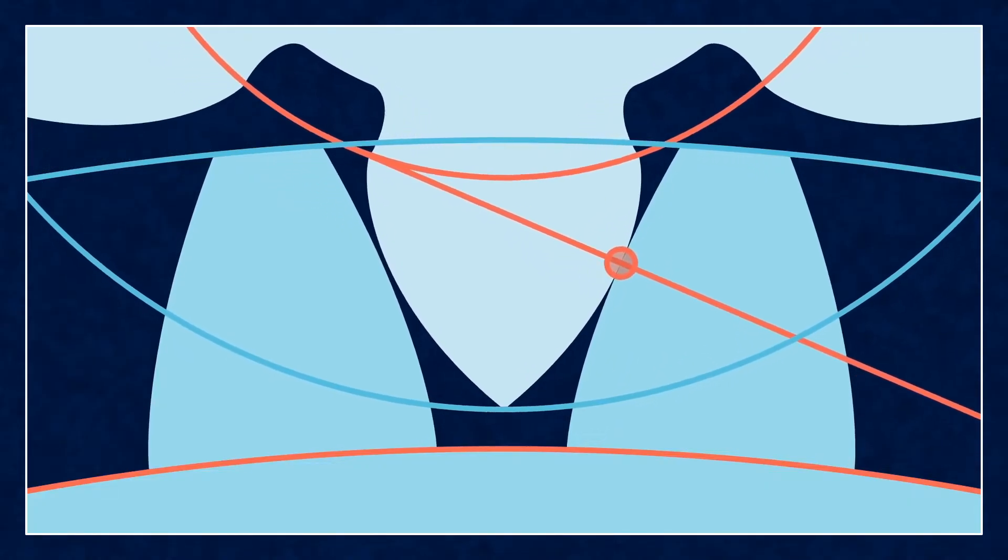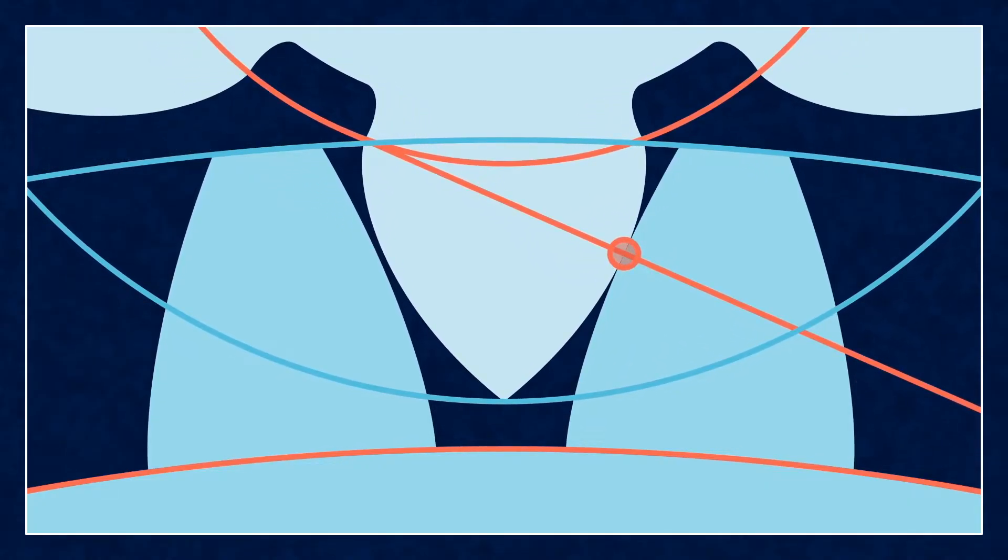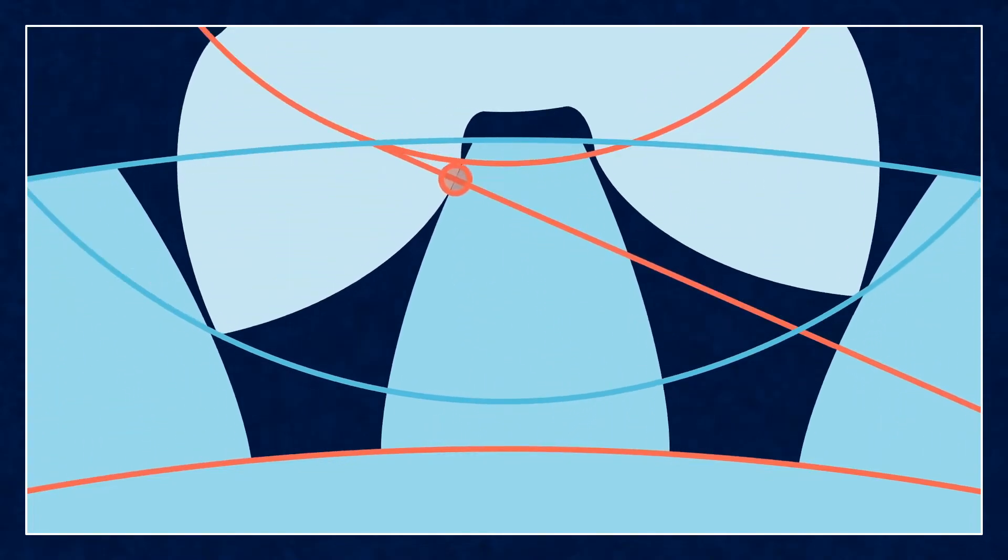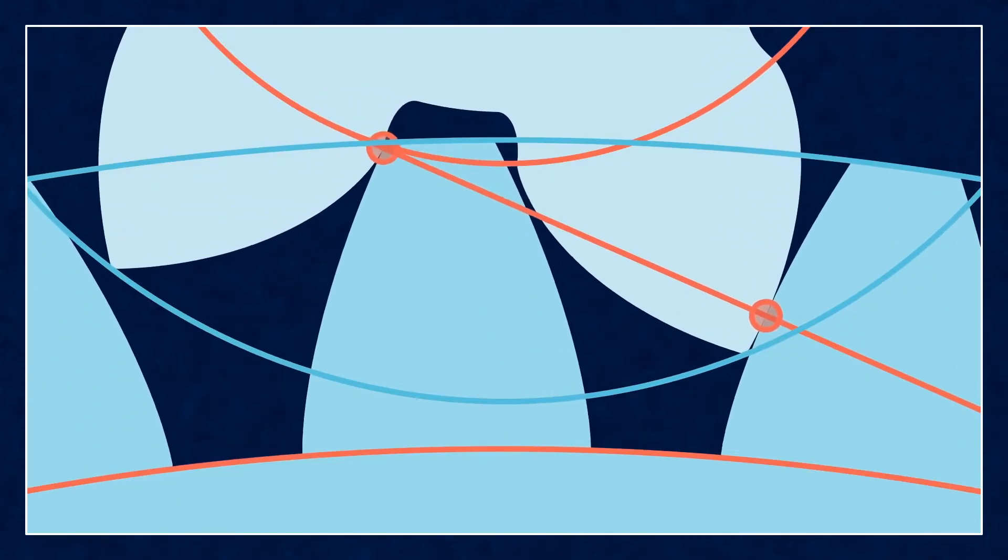So you need to avoid the undercut by applying profile shift. With the profile shifted gear, we barely got it back to a viable contact ratio, just a little over one.